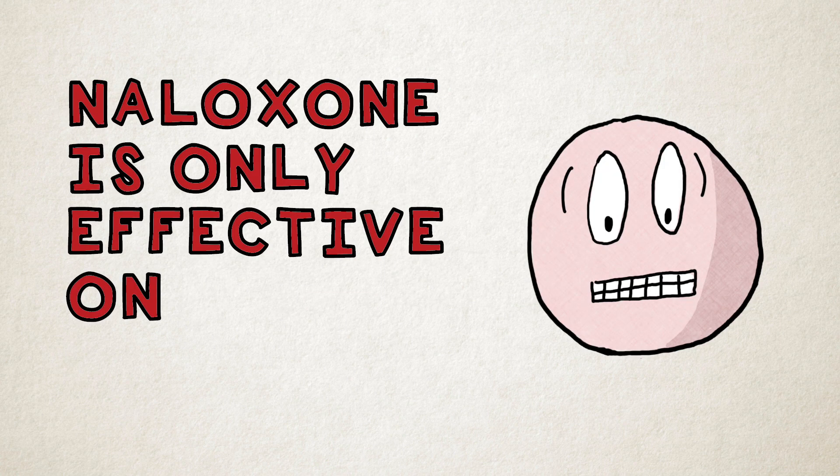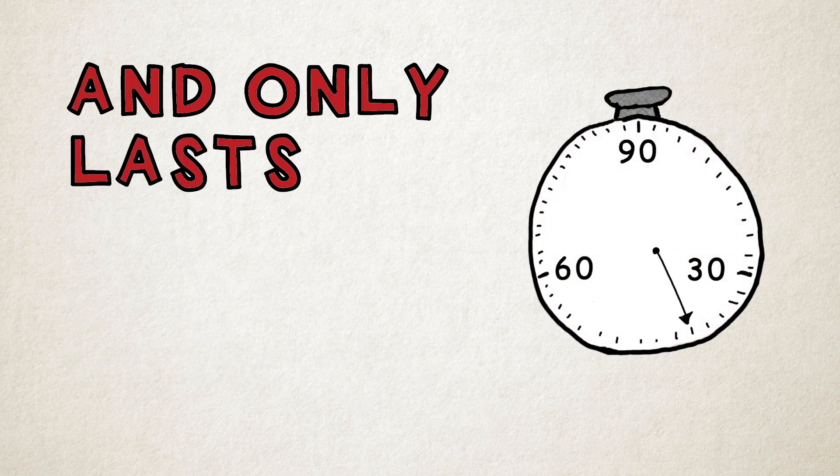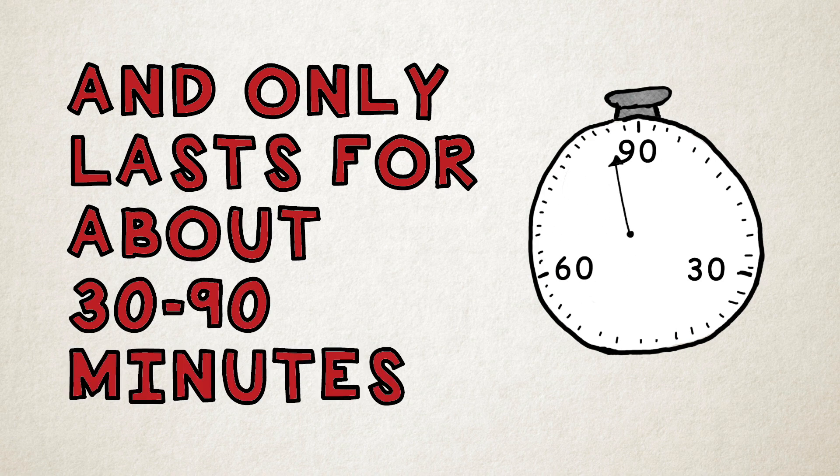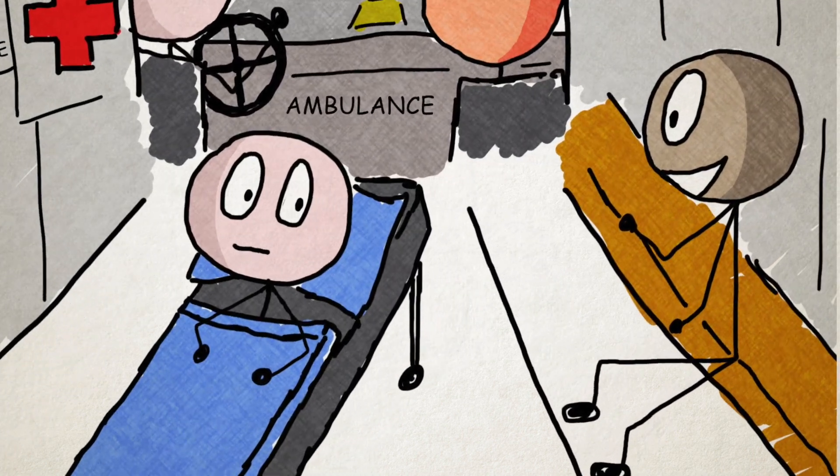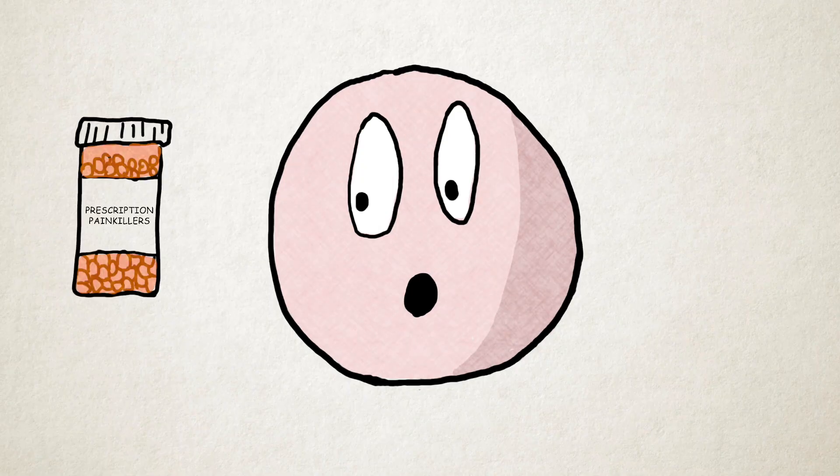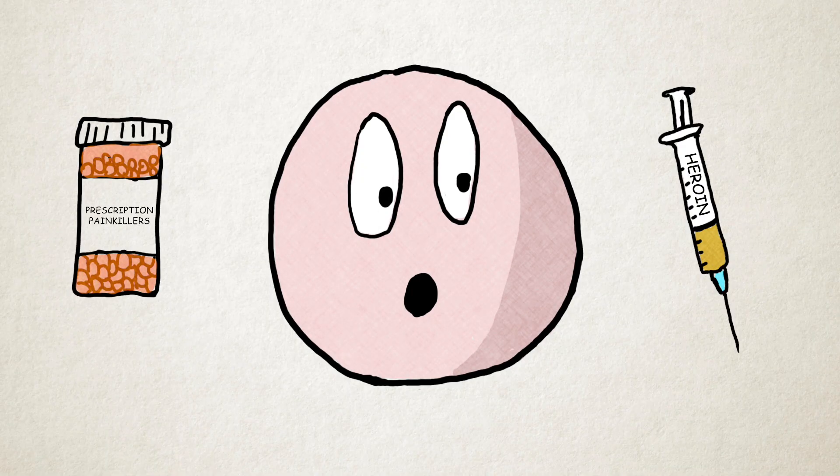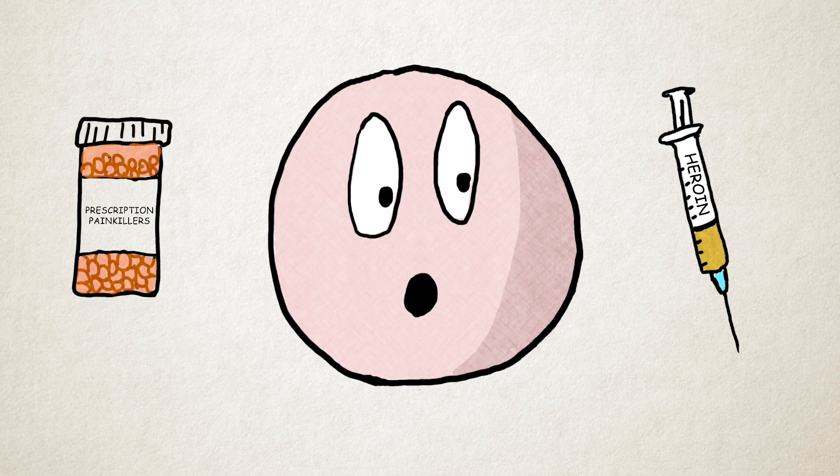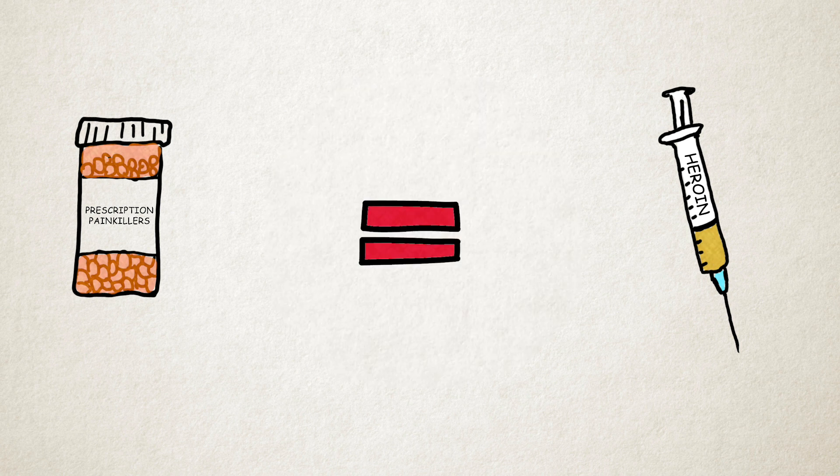Some very important information. Naloxone is only effective on opioid overdoses and only lasts for about 30 to 90 minutes. So it's important to stay with anyone who's been given naloxone and be sure to get them to the hospital. Whether you're taking prescription painkillers or heroin, the things that put you at risk of an overdose are exactly the same.